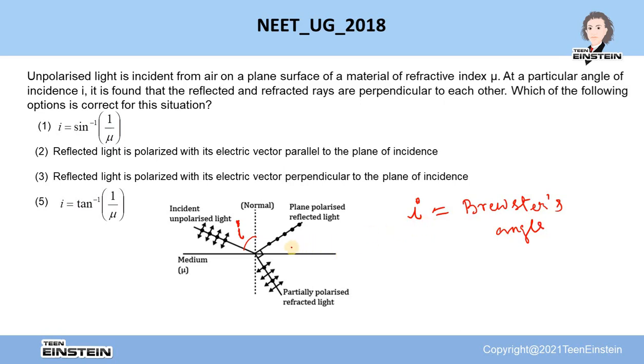And at this particular angle, what happens, the reflected ray will be completely polarized light and it is plane polarized light having electric field vector vibrating in a plane perpendicular to the plane of incidence.